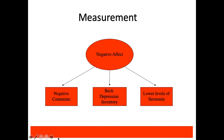As a quick review of measurement: something like negative affect can be measured through negative comments in a qualitative sense, through a quantitative inventory like the Beck Depression Inventory or some other multiple-item scale, or even through biological indicators like serotonin — some chemical associated with a cognition, thought, or emotion.